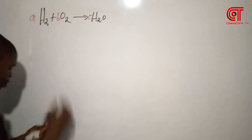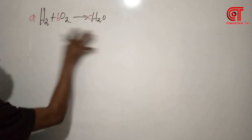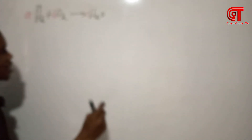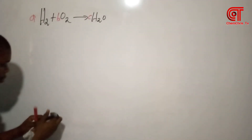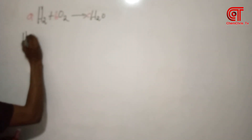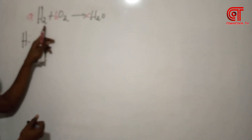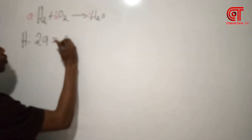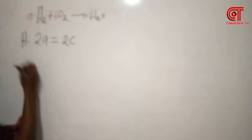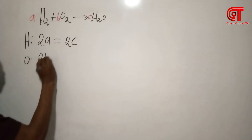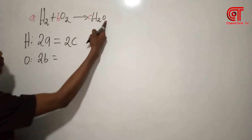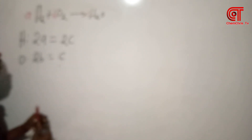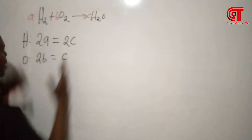The next step is to write the equation for each of the elements. The elements in this reaction are hydrogen and oxygen. For hydrogen: we have 2 on the left side, so we write 2A equals 2C. For oxygen: we have 2 on the left side, so we write 2B equals 1C, which is just C.